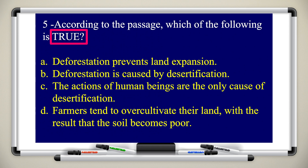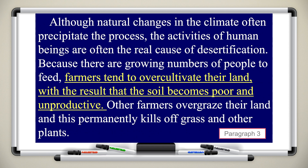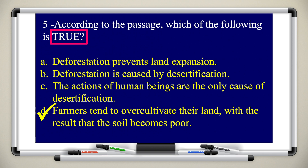Question five: according to the passage, which of the following is true? A — deforestation prevents land expansion. B — deforestation is caused by desertification. C — the actions of human beings are the only cause of desertification. D — farmers tend to over-cultivate their land with the result that the soil becomes poor. In paragraph three we find: 'Because there are growing numbers of people to feed, farmers tend to over-cultivate their land, with the result that the soil becomes poor and unproductive.' So option D is true.